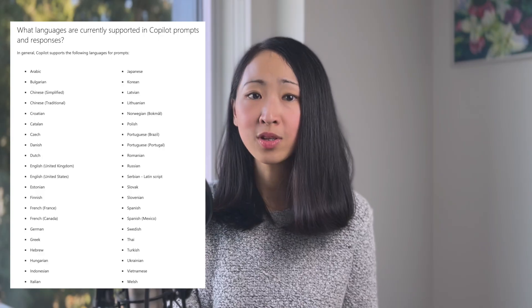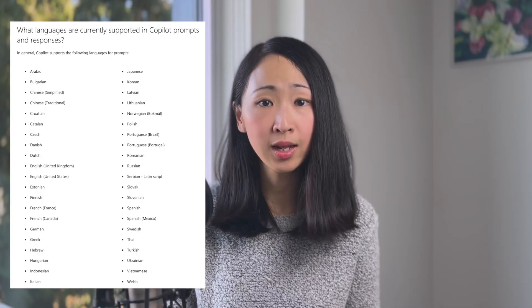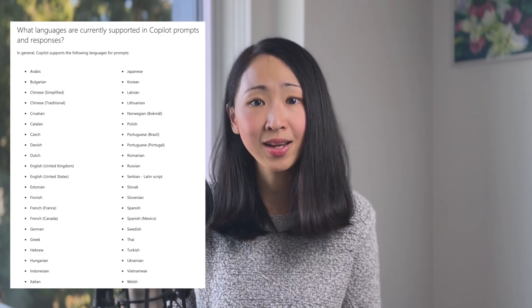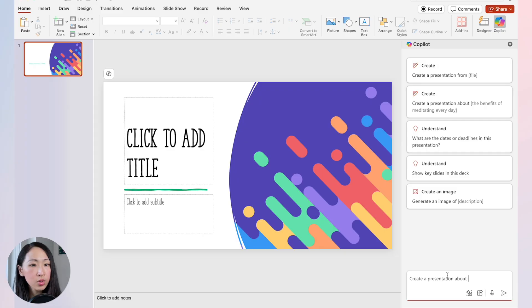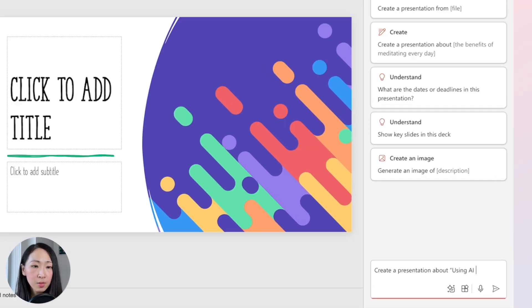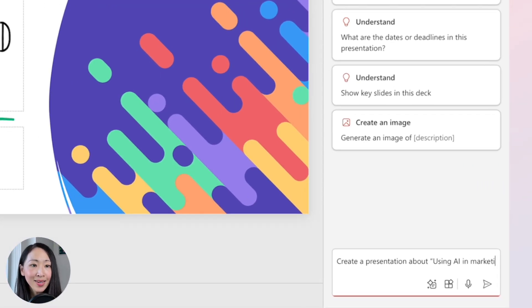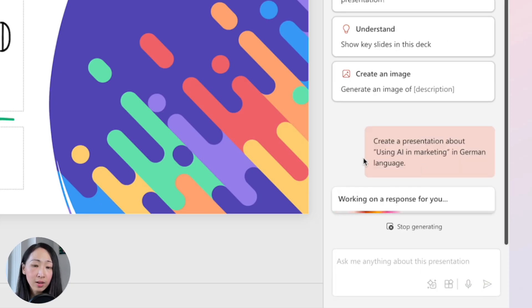Another useful way is to create presentations in multiple languages — increasingly useful if you work in a multinational organization or deal with content in different languages. Copilot supports more than 40 languages, which is a huge advantage compared with other AI presentation tools.